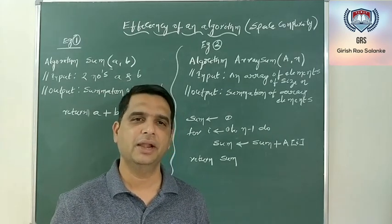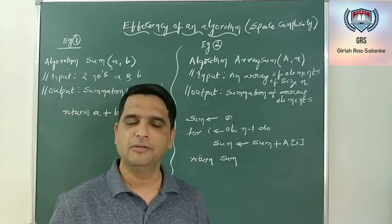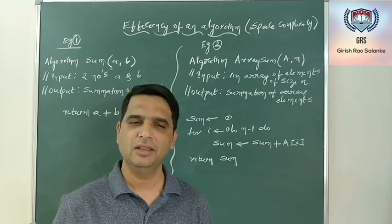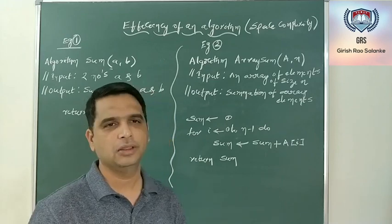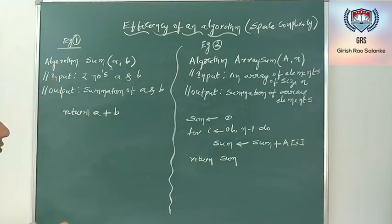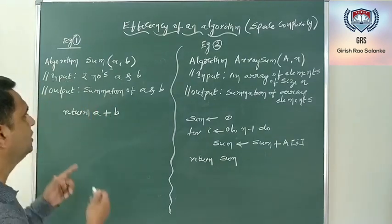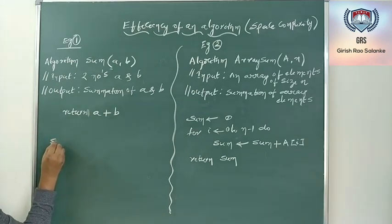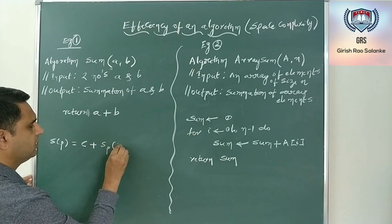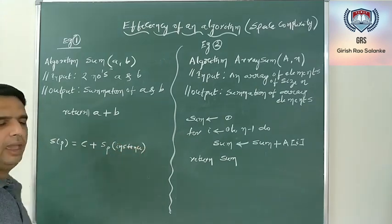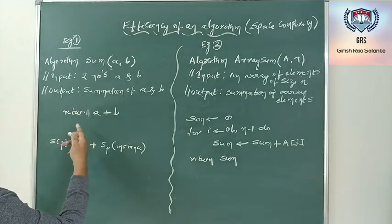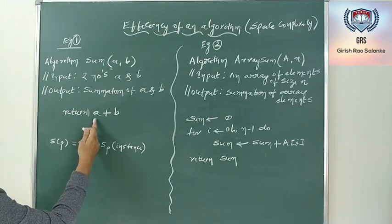Let's consider two different examples to understand how to find the space complexity of an algorithm. We will assume that each variable used in the algorithm uses a constant space denoted with 1 — that is, 1 unit of constant space is used to store a variable. In the first example, the algorithm finds the summation of two numbers A and B. Using the formula S(P) = C + SP(instance), where C is the constant part and SP is the dependent part, there are two variables A and B, and the only statement is A plus B.